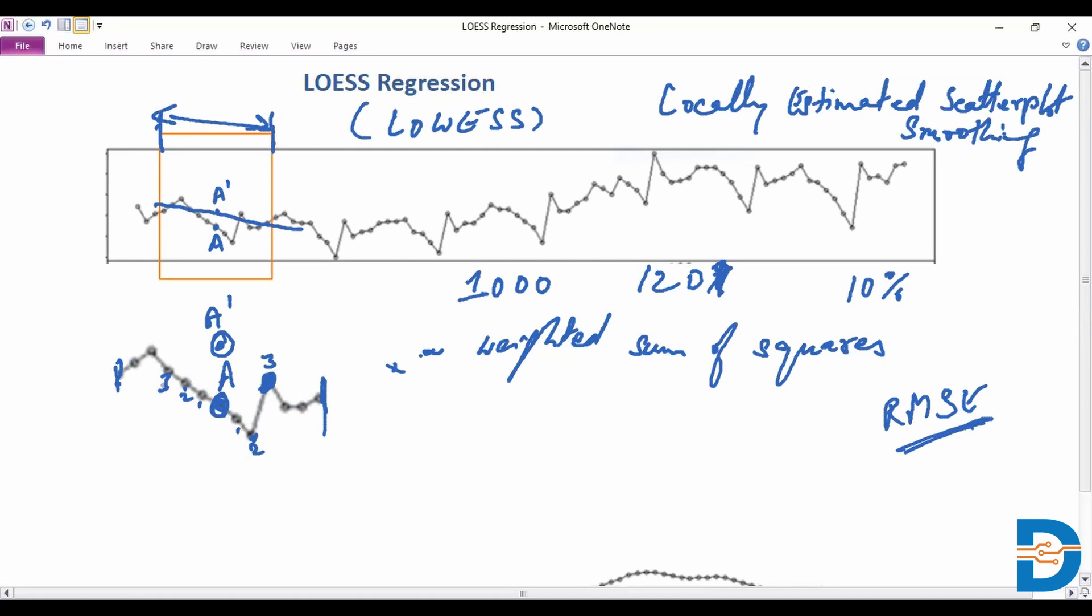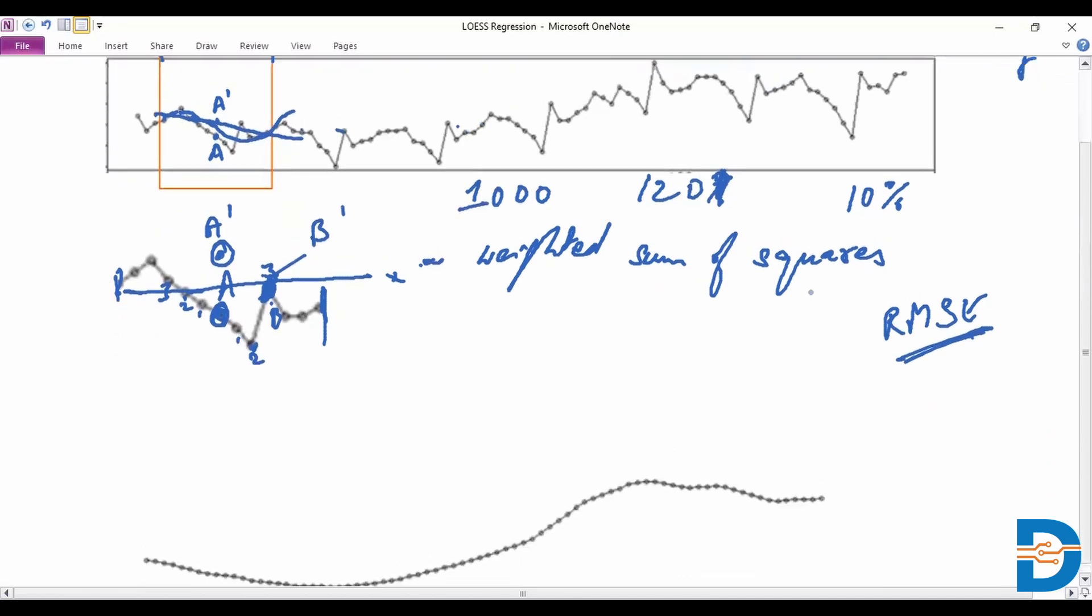You'd have a prediction line somewhat more like this. Based on that line you would have a prediction point for that particular point, let's say B, this is B prime. Similarly we're talking about having prediction points for each of these data points. Effectively when we connect them we have a smoother curve like this. We continue this for the entire duration of the data and the extent of our data.